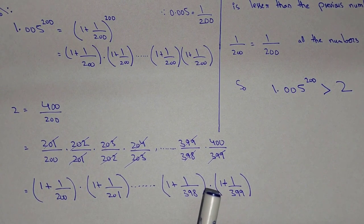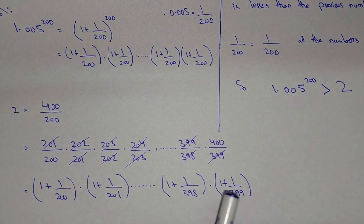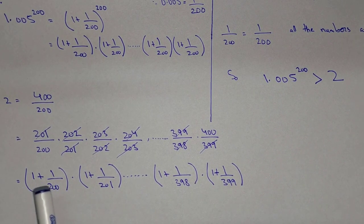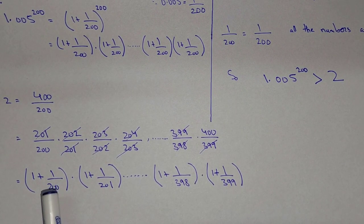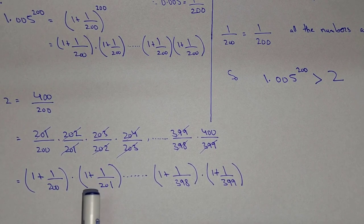Here you can see that here we have 1 over 200 and here we have 1 over 201. So you know that 1 over 200 is bigger than 1 over 201.